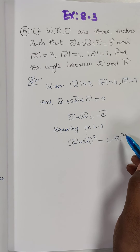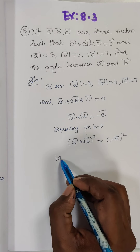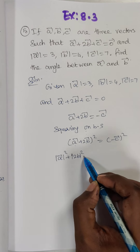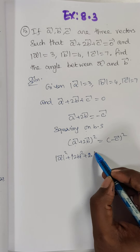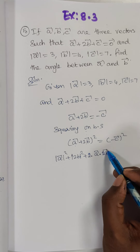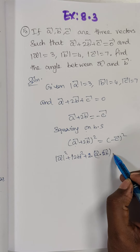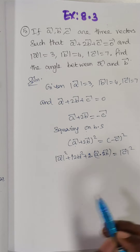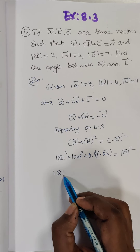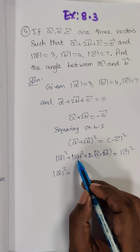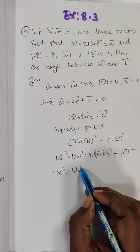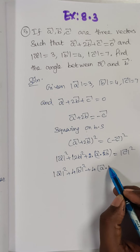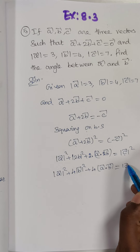Already we know that (A vector plus B vector) whole square formula gives: modulus of A vector squared plus modulus of 2B vector squared plus 2 into A vector dot B vector is equal to modulus of C vector squared. So modulus of A vector squared plus 4 times modulus of B vector squared plus 4 into A dot B vector is equal to modulus of C vector squared.